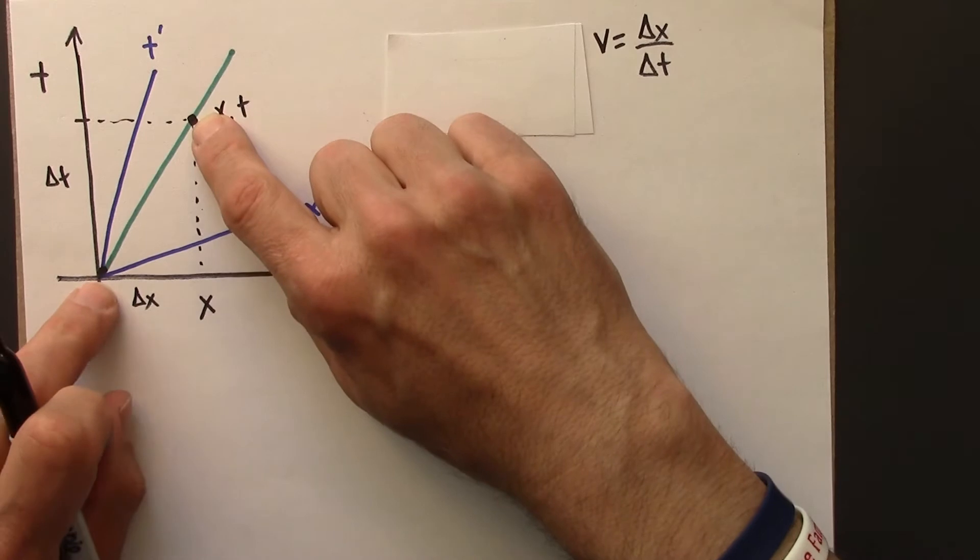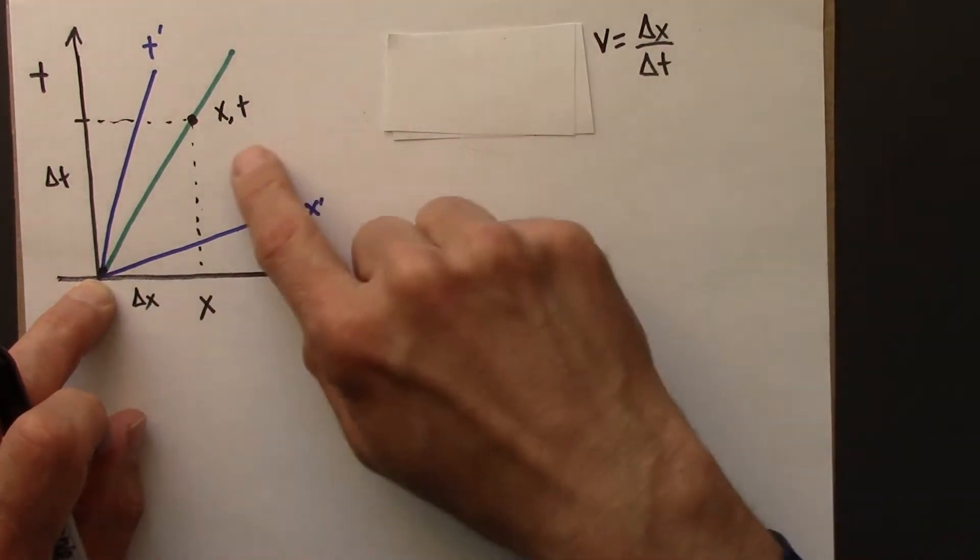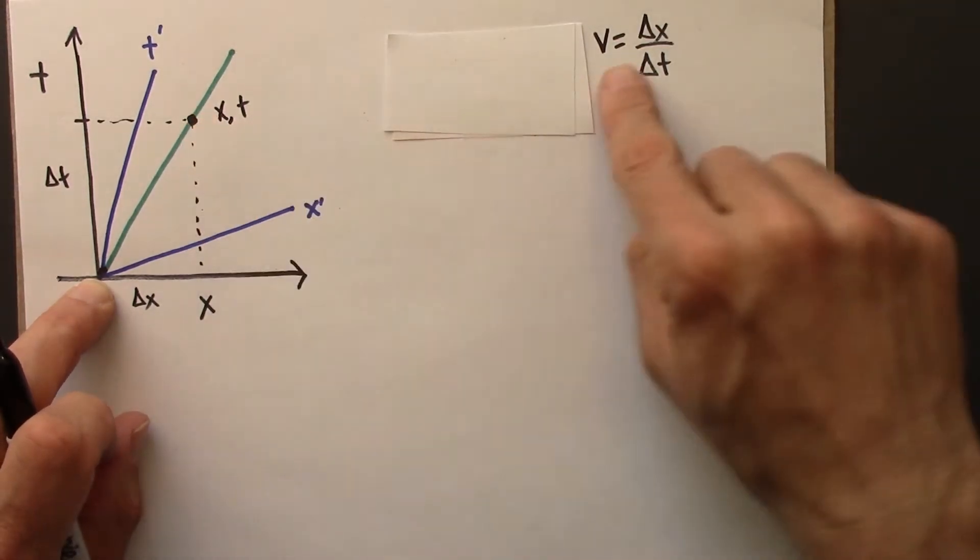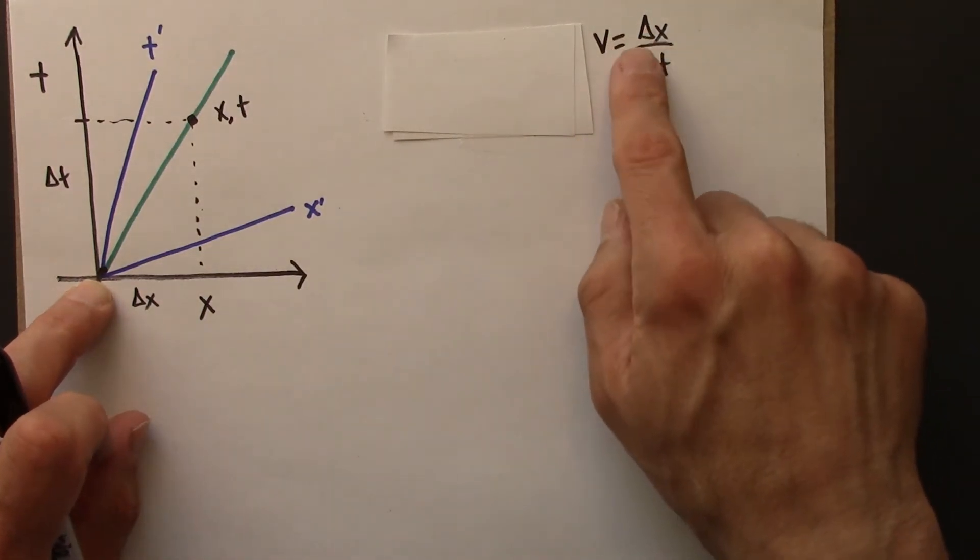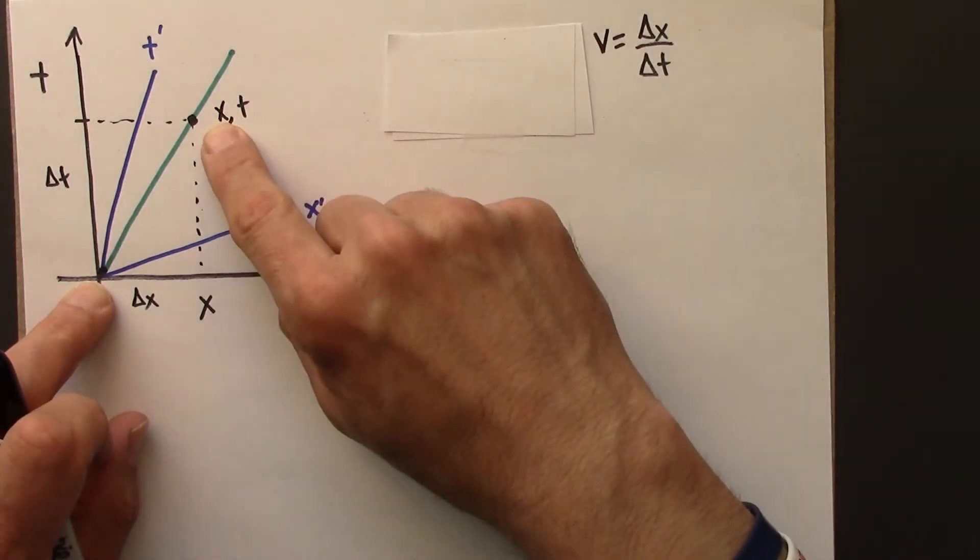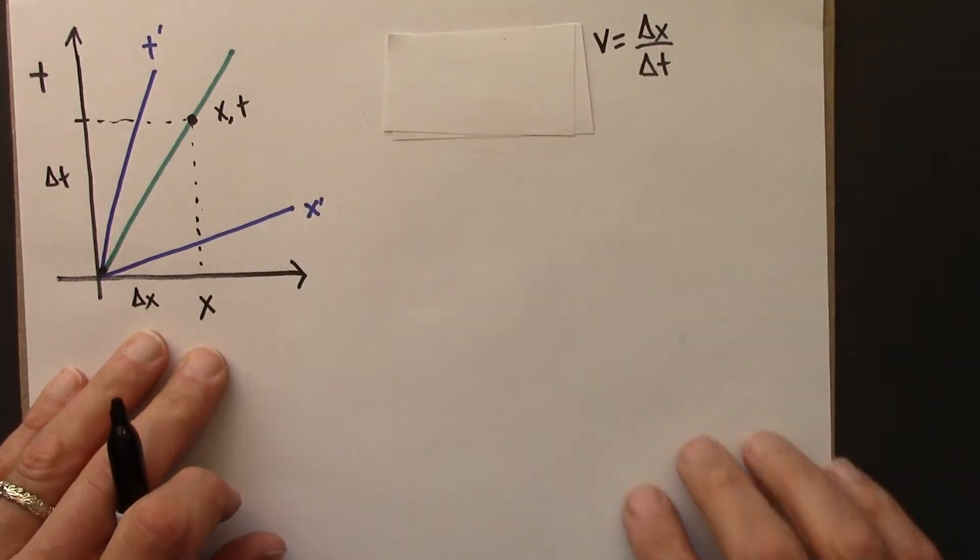And so, since we're taking one of the points to be the origin, the speed is really just x over t. So I mention that to justify that the formula, that I can use the Lorentz transformations with a delta x and a delta t, because a delta x is really just an x in this setting.